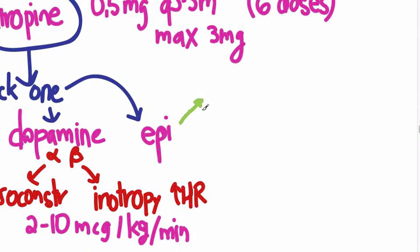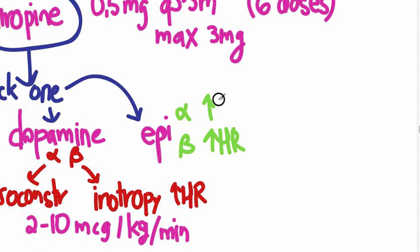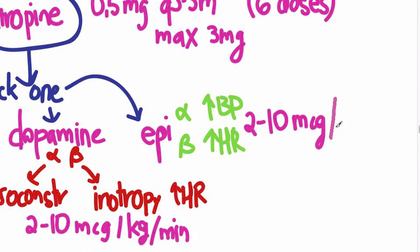Epinephrine is also alpha and beta, but more equivalently balanced. It will increase your heart rate and blood pressure. The dose is 2 to 10 micrograms per minute. Note the difference from dopamine: dopamine is 2 to 10 micrograms per kilogram per minute, while epinephrine is 2 to 10 micrograms per minute — same numbers but different because of the per-kilo component.